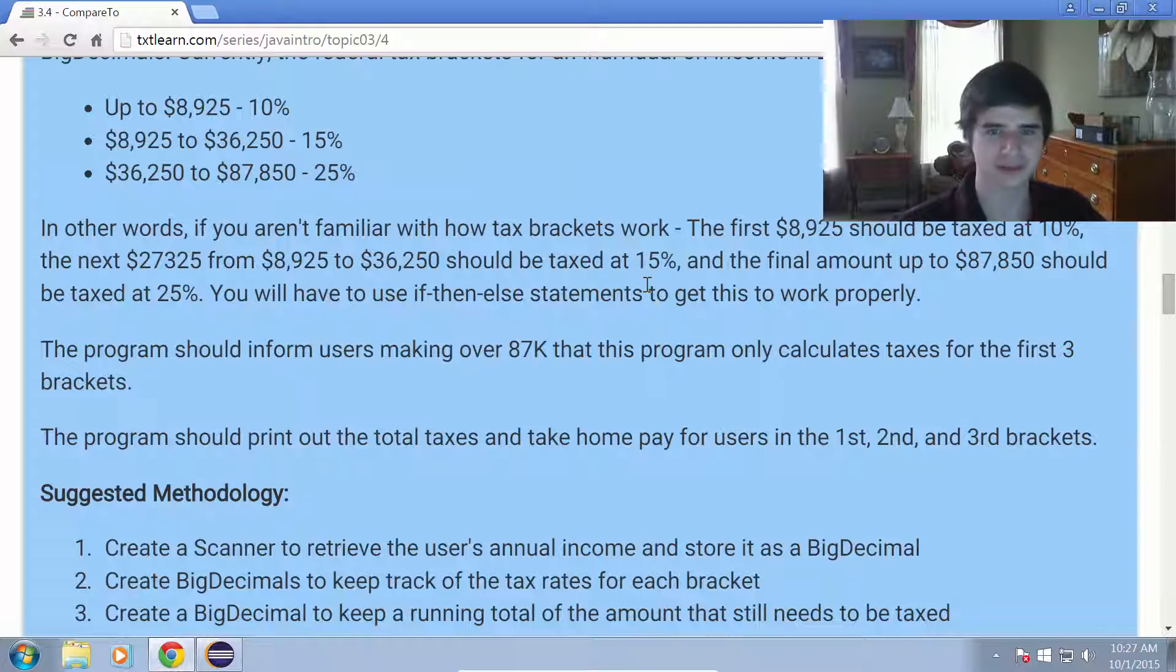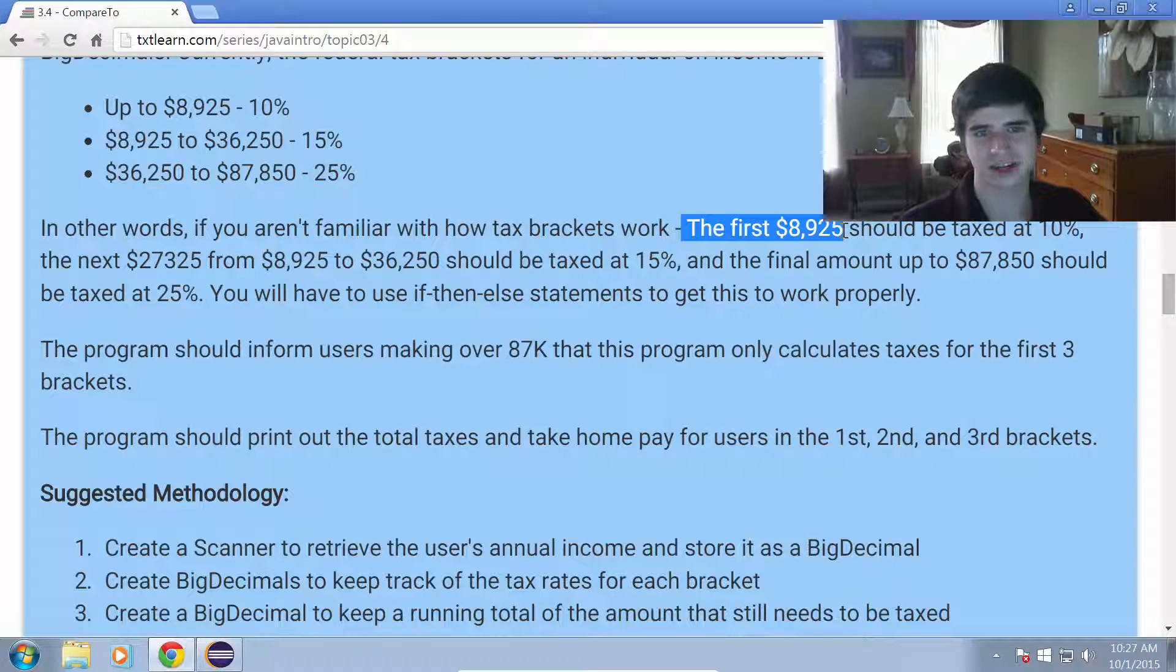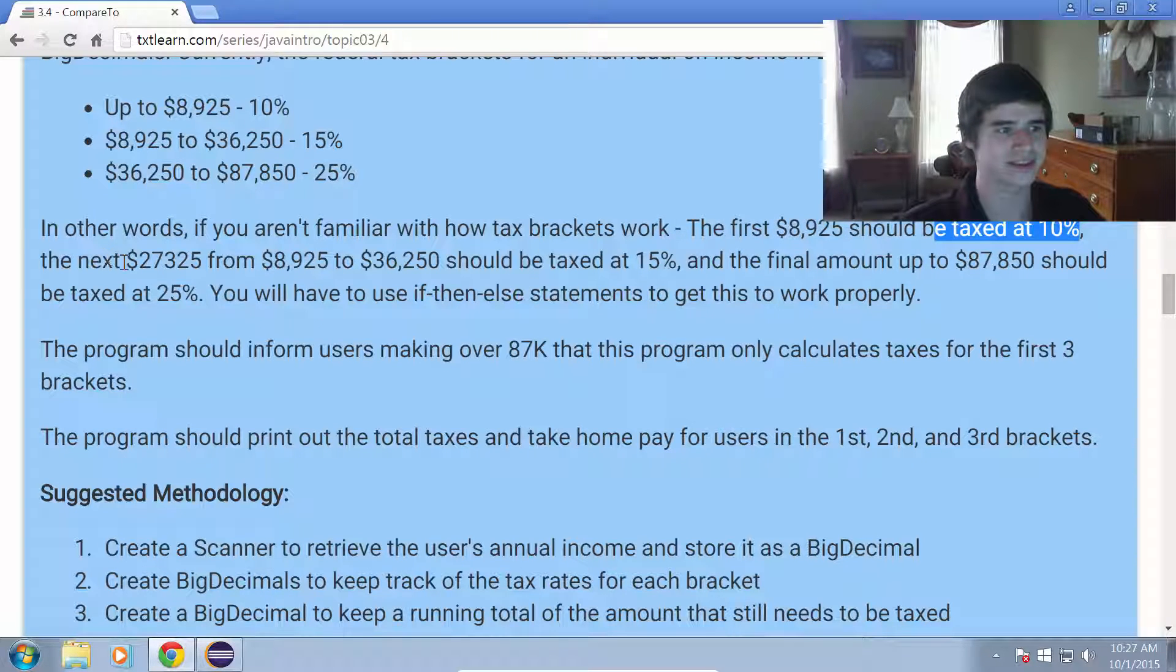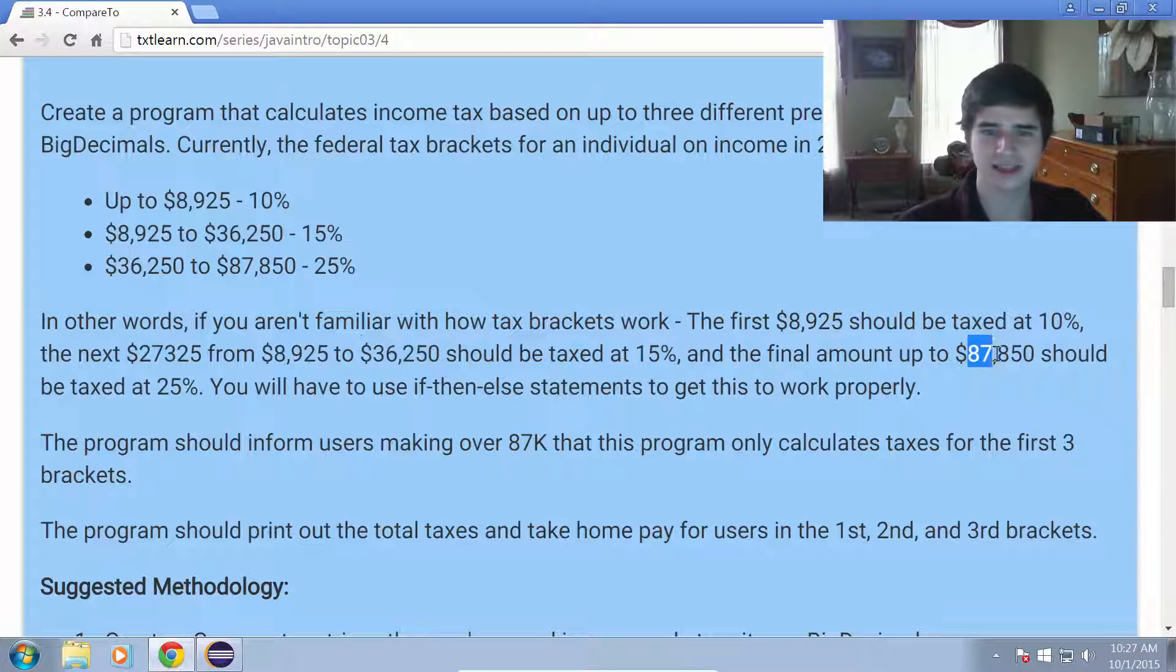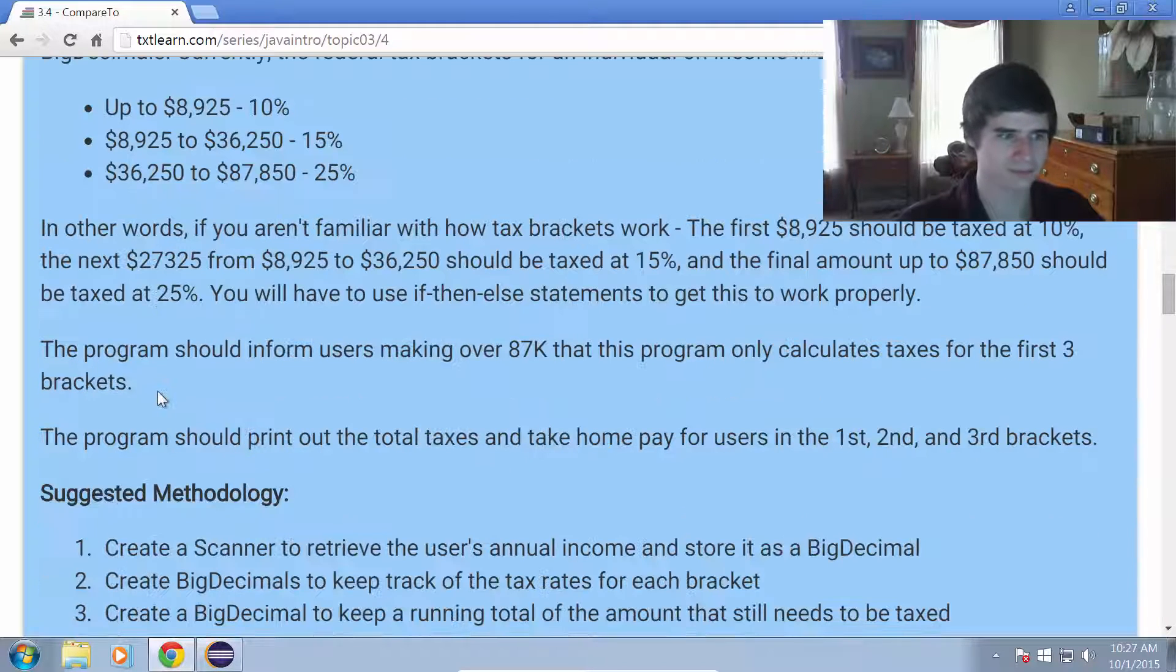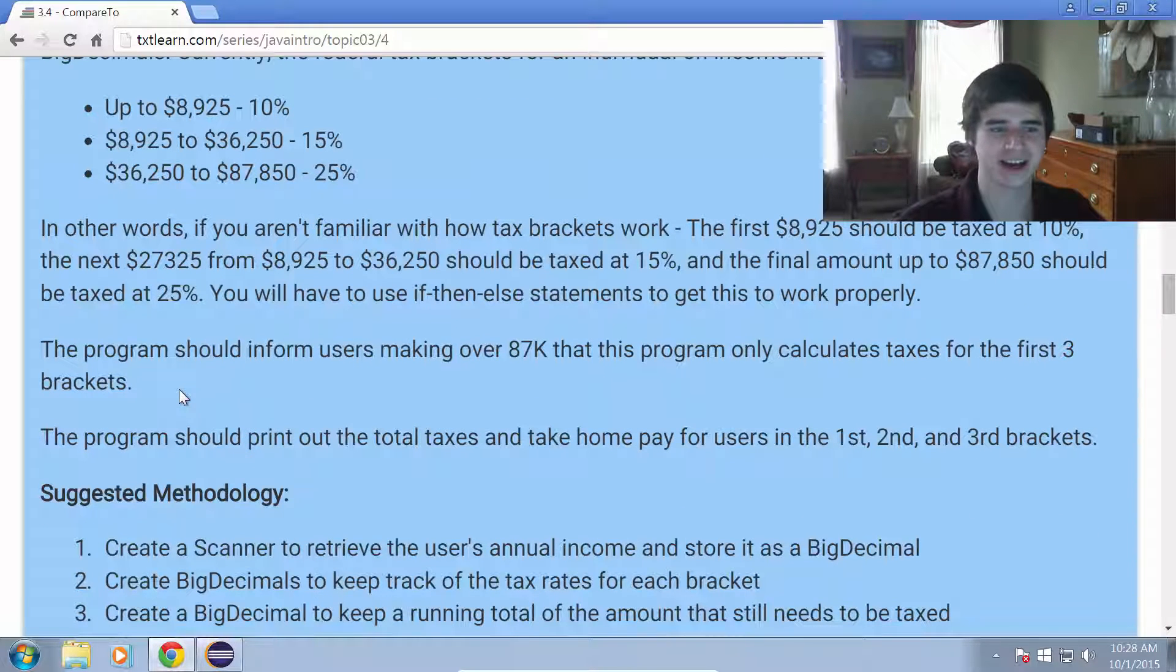So if you're not familiar with how tax brackets work, I'm just going to explain that real quick. So this means that the first $8,925 would be taxed at 10%. And then the next $27,000 between around $9,000 and $36,000 is taxed at 15%. And then the final amount from $36,000 up through $87,000 is taxed at 25%. And I'm expecting you to use if-then-else statements to get this to work properly...